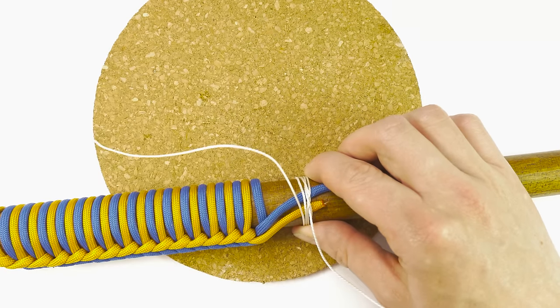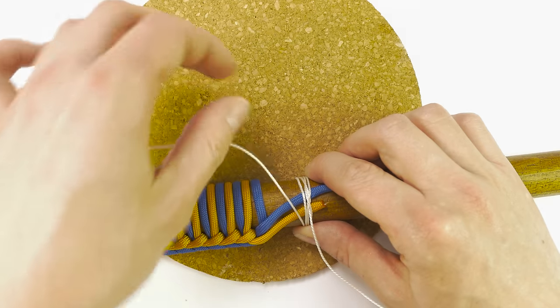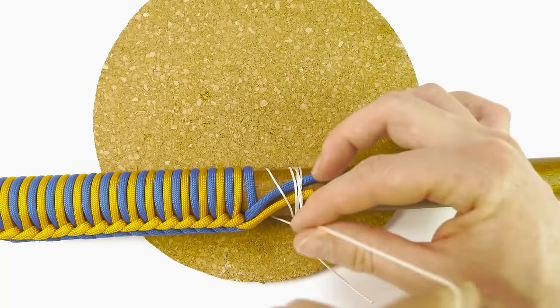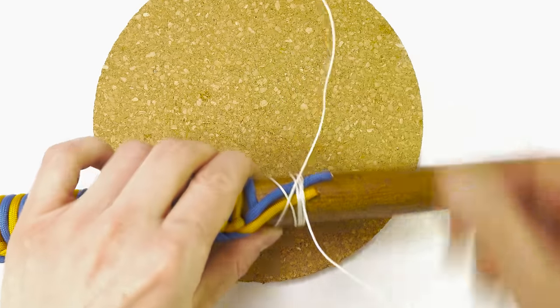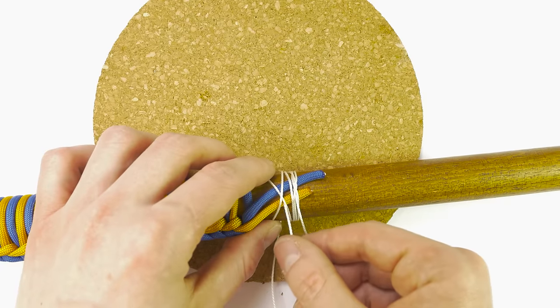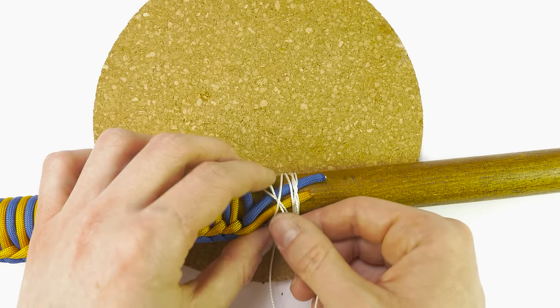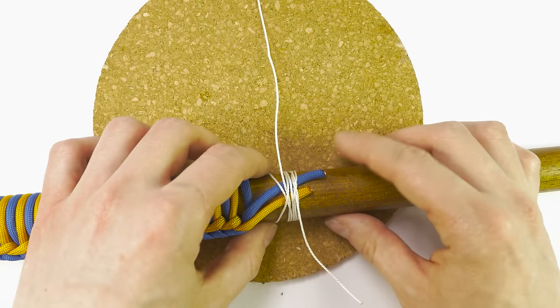After that, we finish with another constrictor knot. So wrap around, create an X shape like we did before. And then finally, go under this X. Like this, and adjust your constrictor knot.